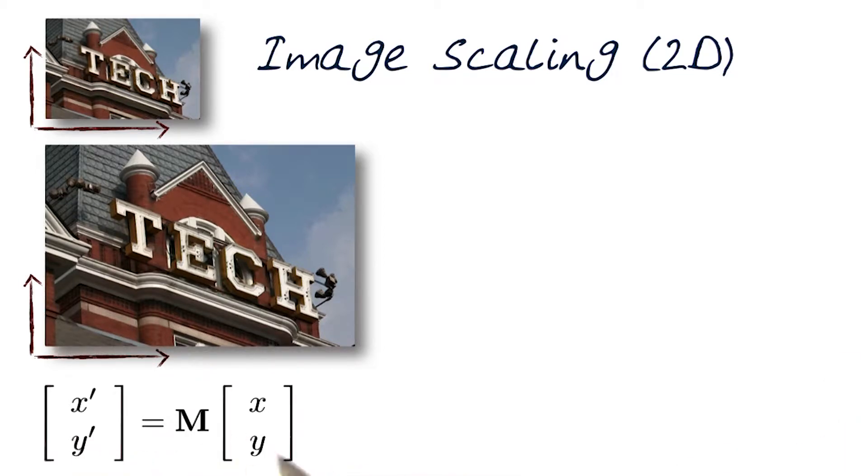Again, we have a simple set of things here in terms of how I want to get x prime and y prime from x and y. Now let's think about what would be in the matrix M.